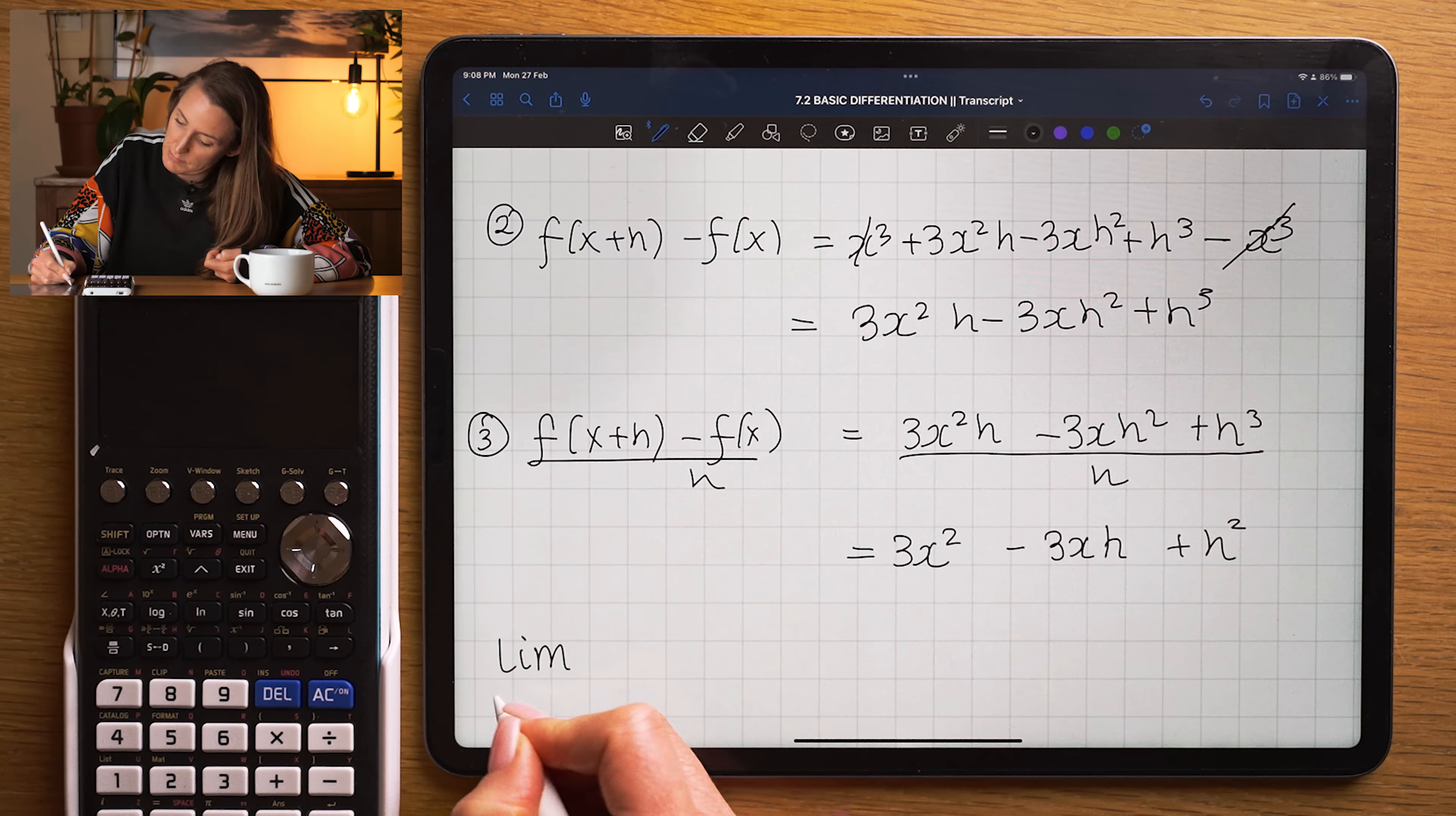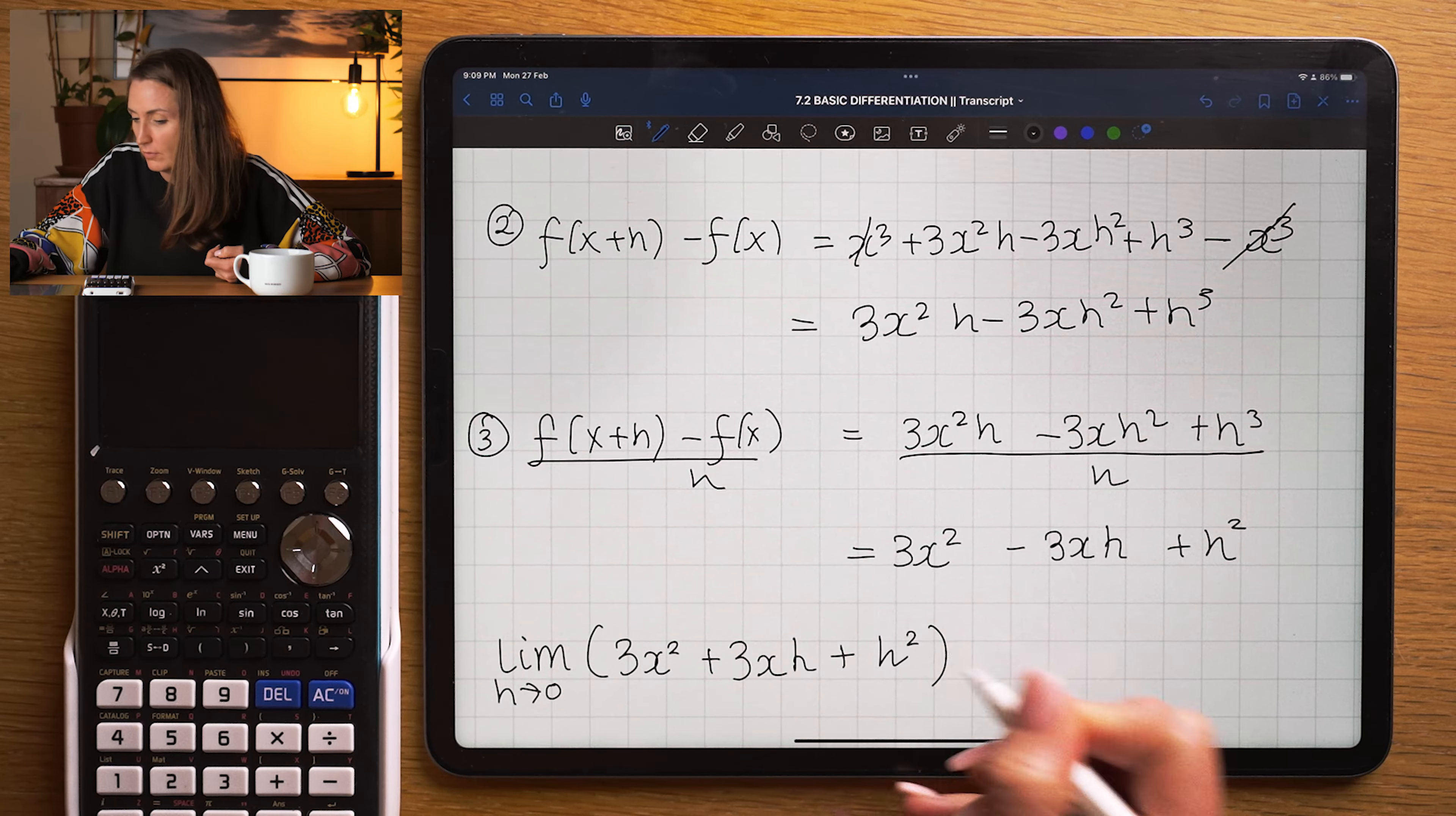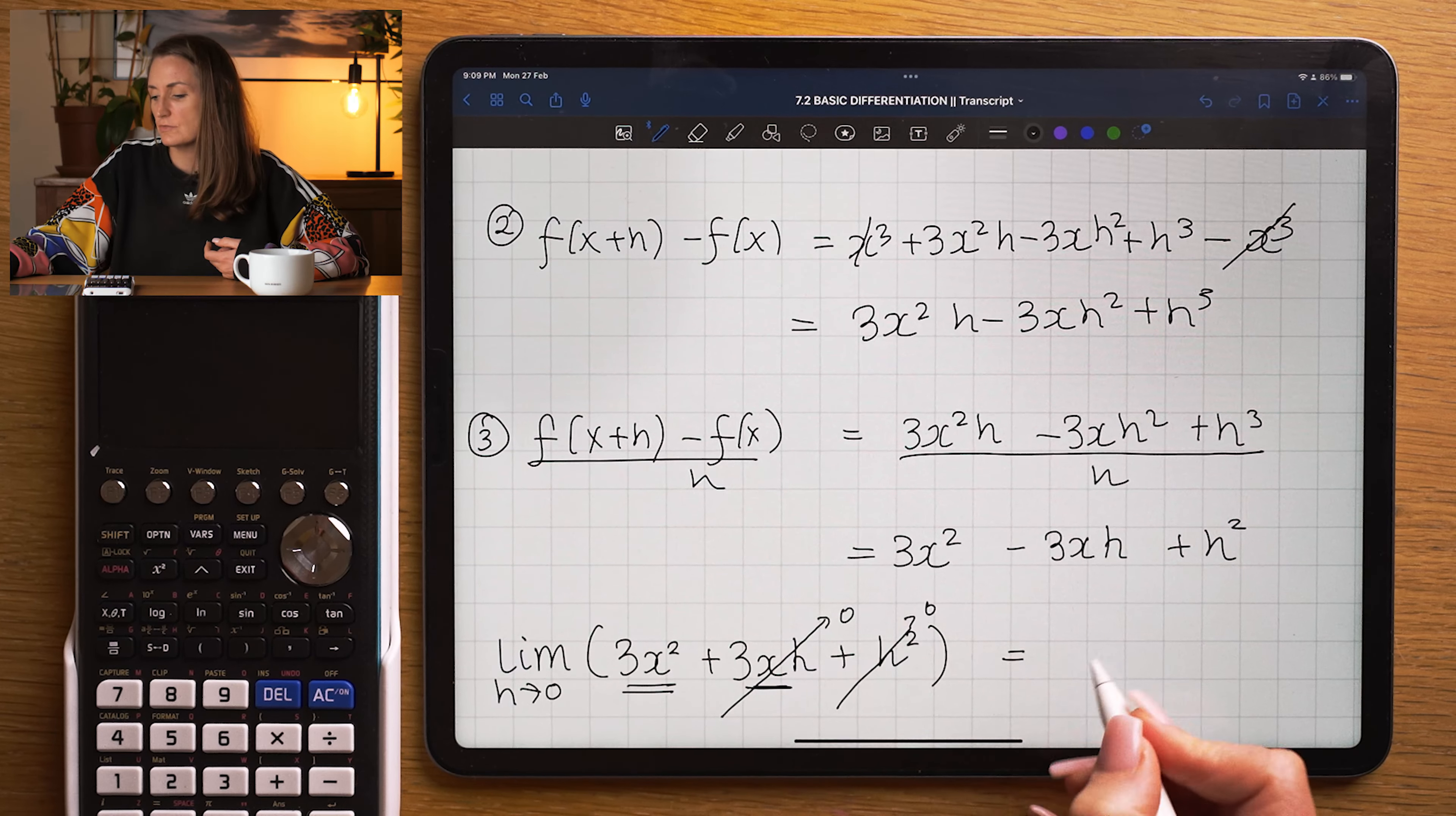Now I'm going to take the limit of that expression as h tends to 0. So if h is really small, very, like imagine it's 0.0000001 or even smaller than that. This would make this really, really small or tend to 0 and this one too. So the limit here is just 3x squared, which isn't affected as h gets really, really small.